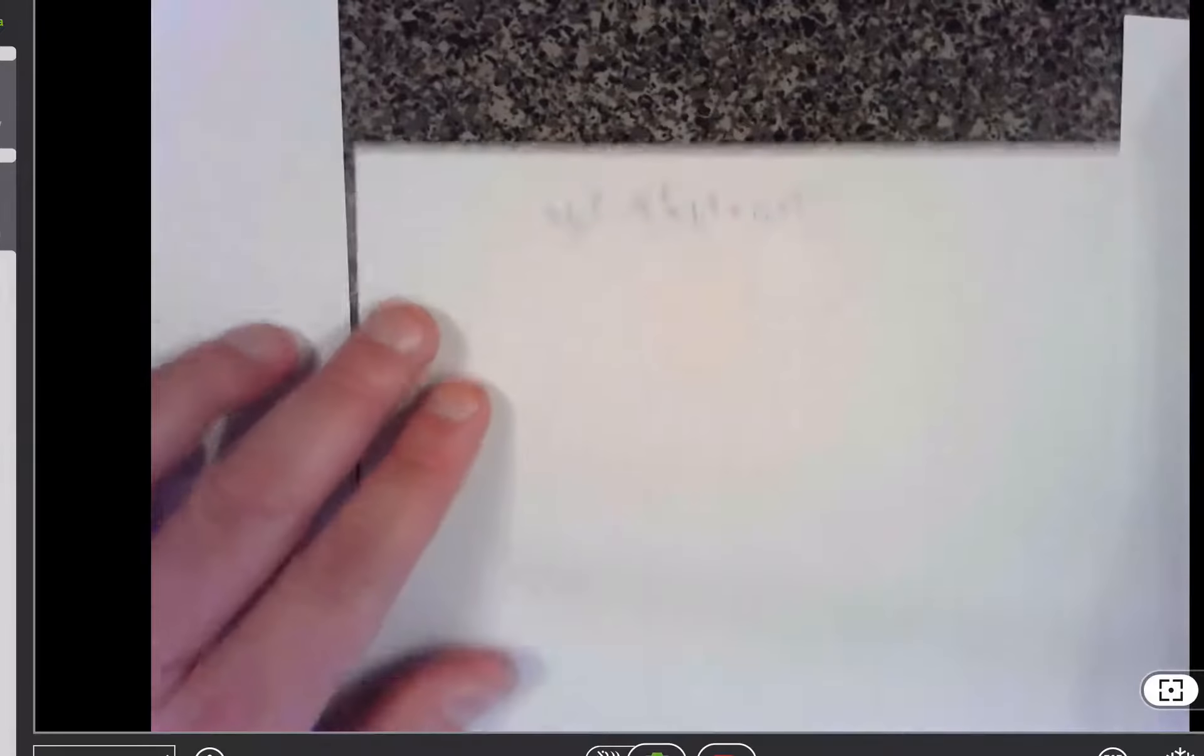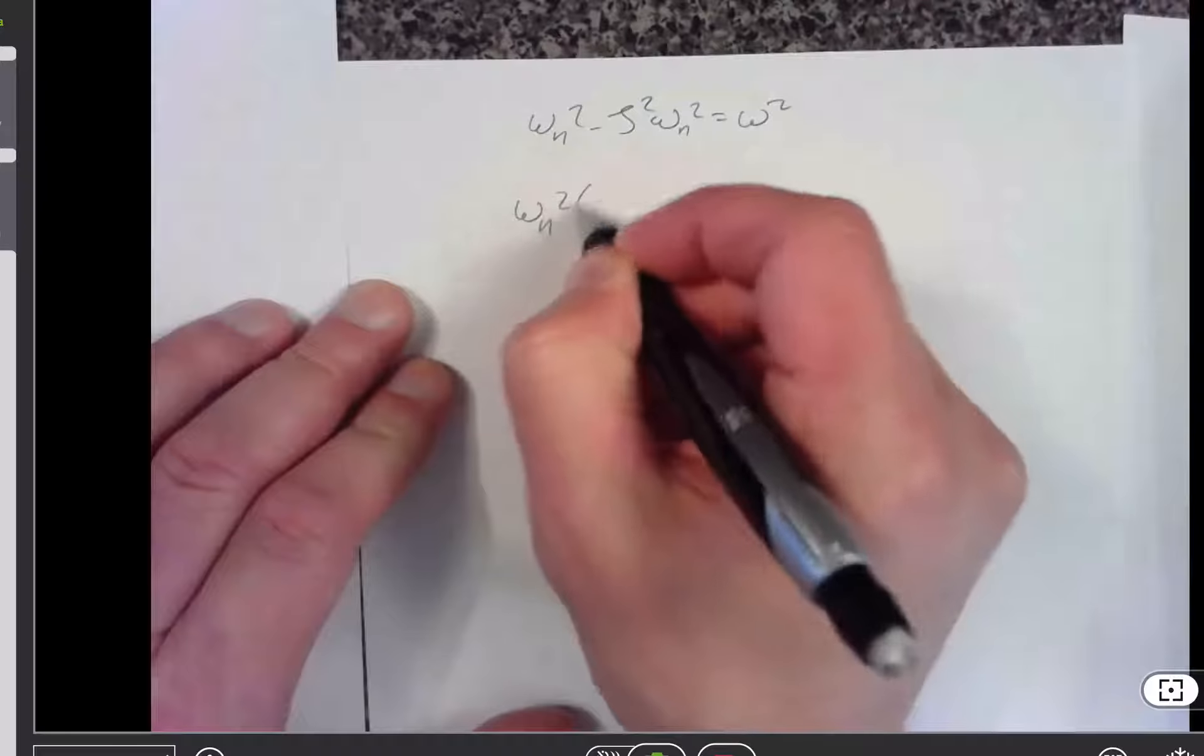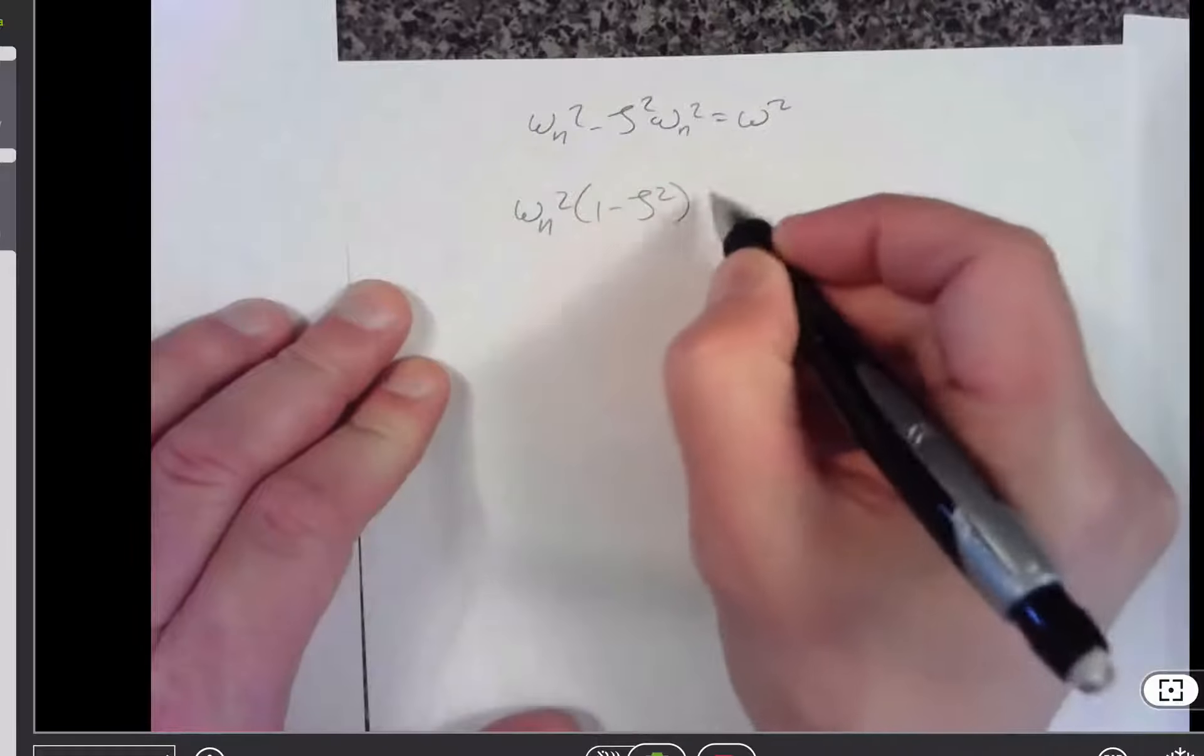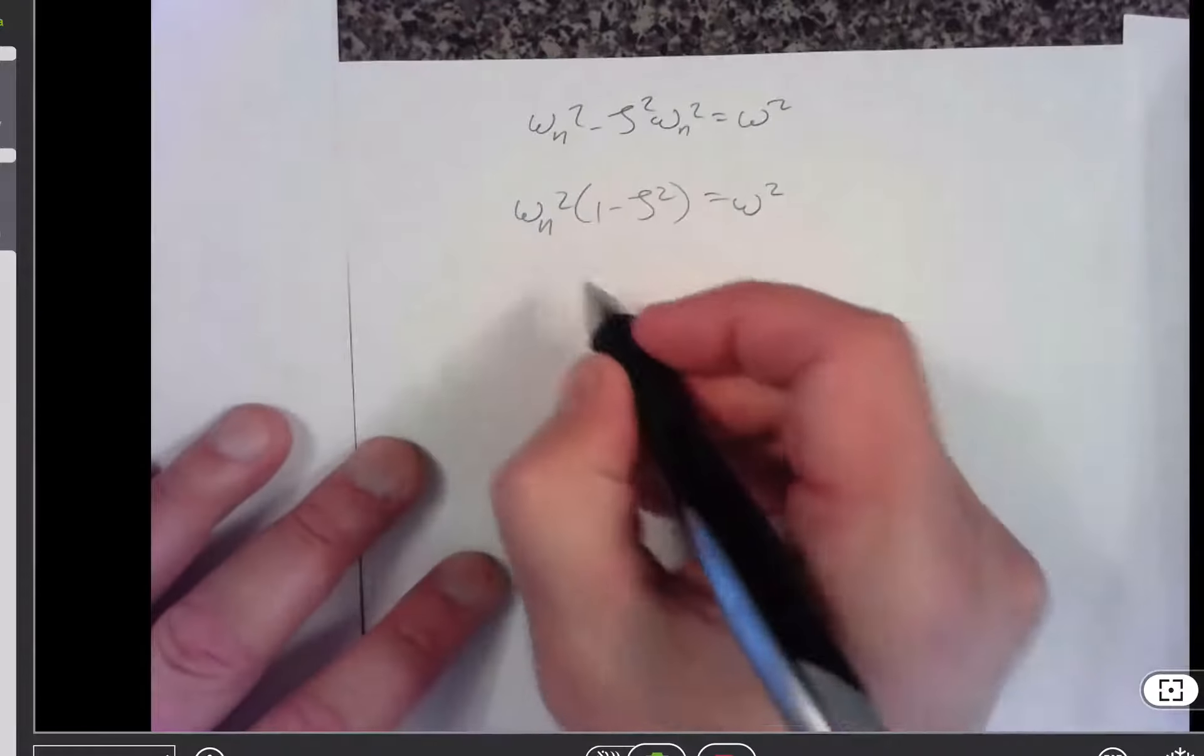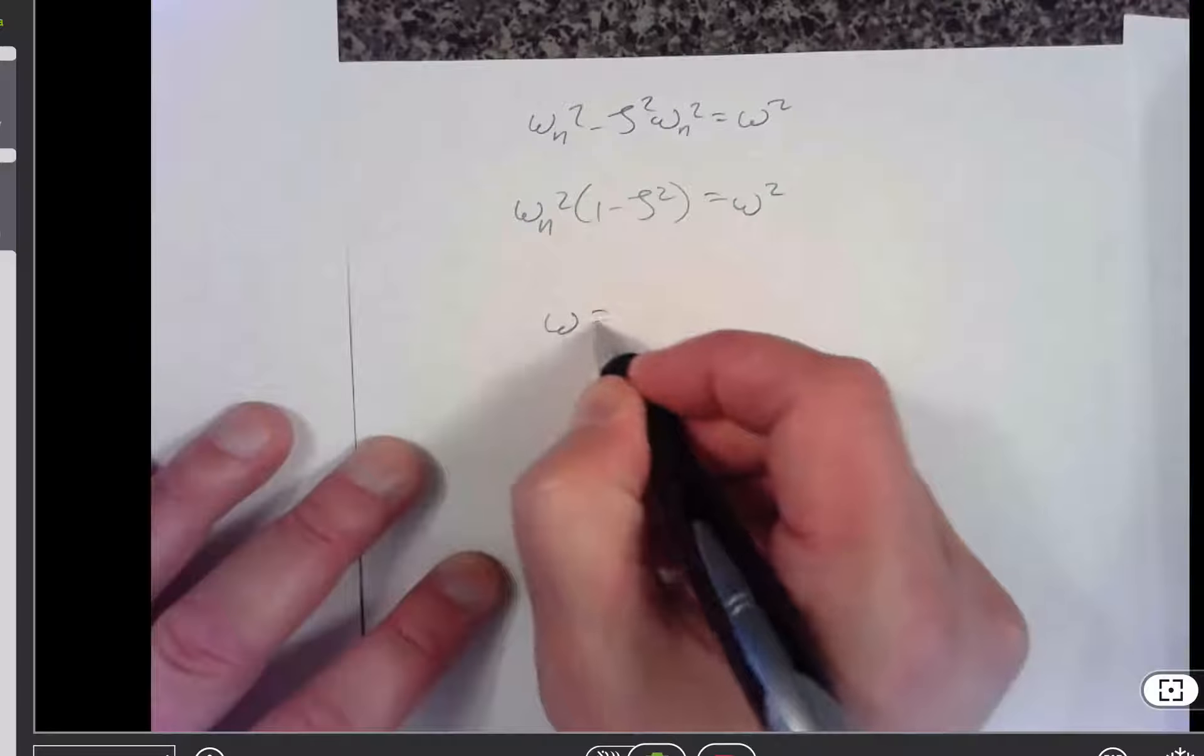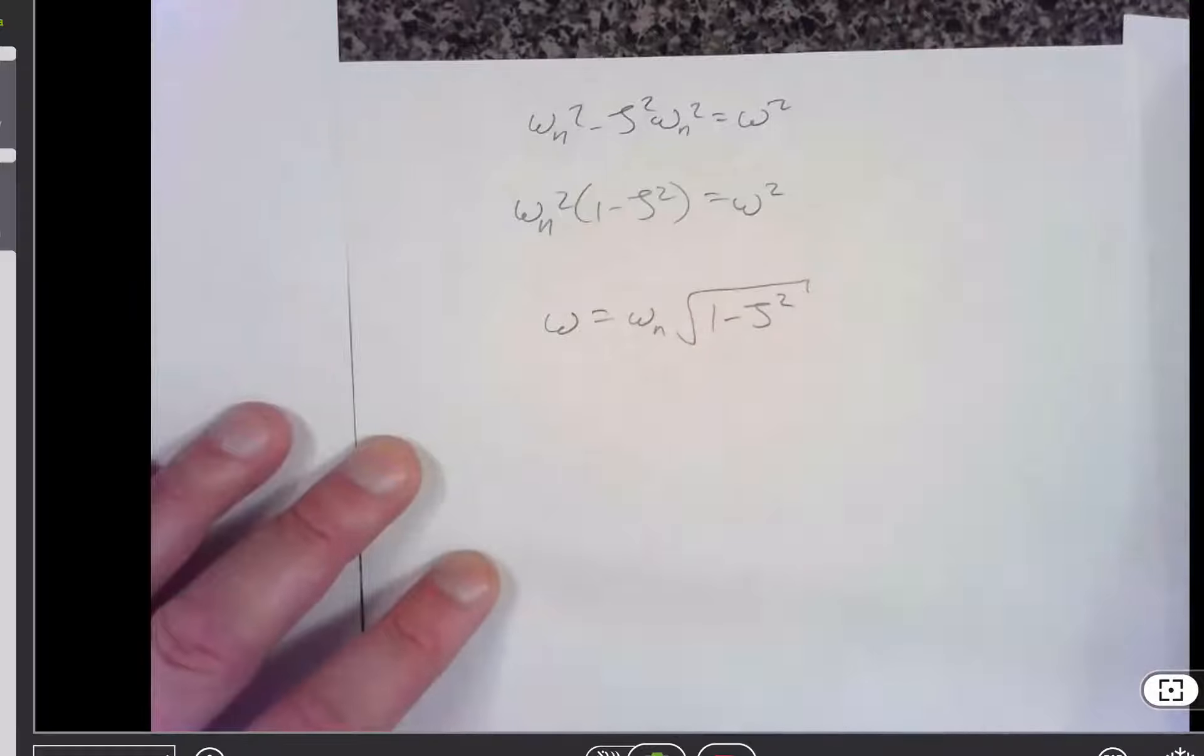So I can, at that point, pull out an omega n squared. And so I get omega n squared times 1 minus zeta squared is equal to omega squared. And if I take the square root of both sides, I get that omega is equal to omega n root of 1 minus zeta squared.